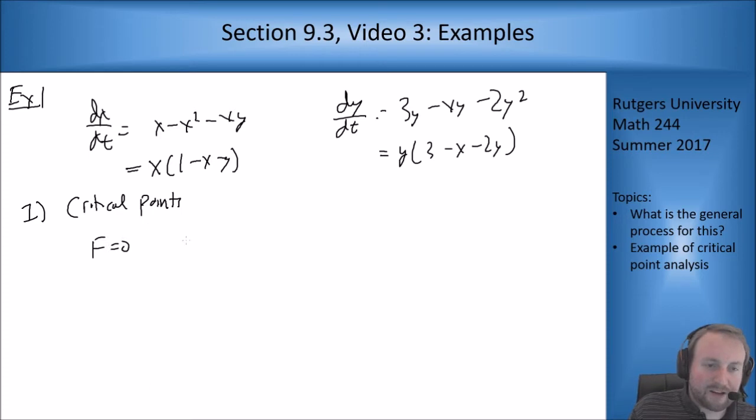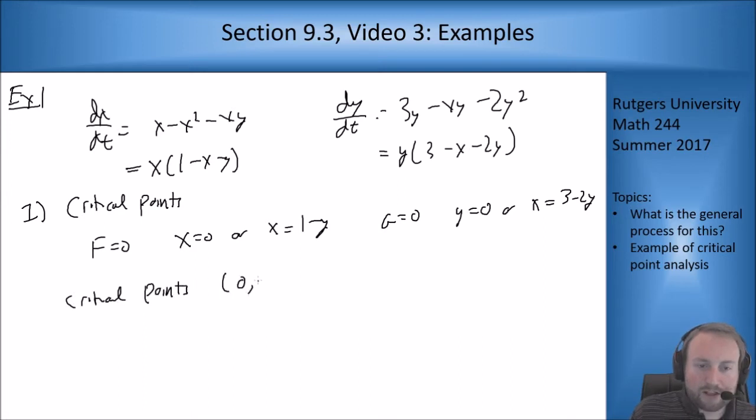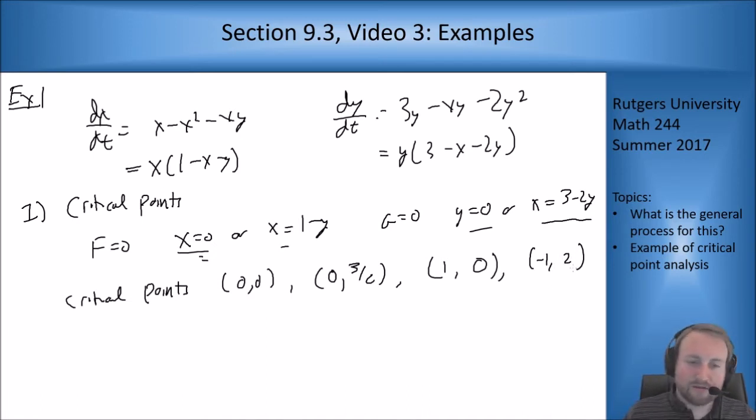For f equals 0, I can have x equals 0 or x equals 1 minus y. For g to be 0, I can have y equals 0 or x equals 3 minus 2y. My critical points are: (0,0), (0, 3/2), (1,0), and if you calculate the intersection of those equations, (-1, 2). So four critical points, meaning we do this analysis four times.